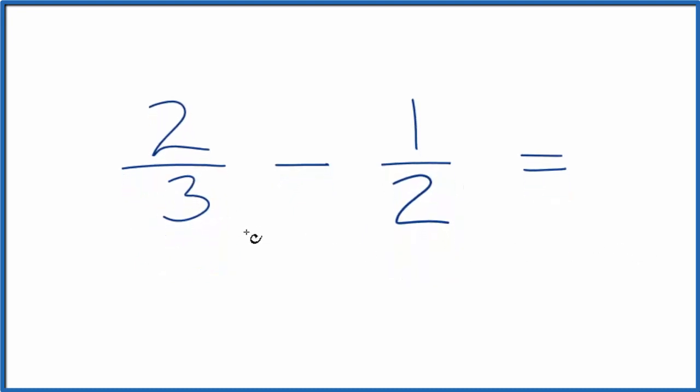Let's list the factors for 3 and for 2. So 3, 6, 9, 12. Then for 2, we could do 2, 4, 6, and there it is, 6.